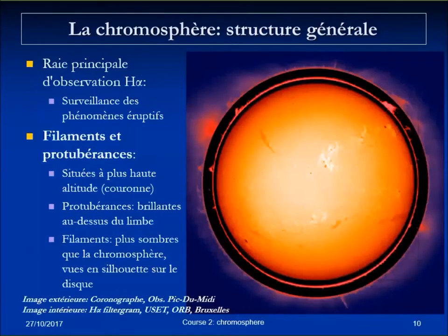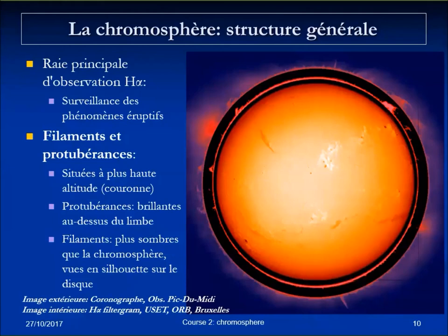The main emission line used to observe the chromosphere is H-alpha, which is the best wavelength to show dark filaments. These filaments look dark by absorption because they are slightly dimmer than the quiet solar disk. But when superimposed on the dark sky at the edge, they look like bright features and extend far above the thickness of the usual chromosphere.